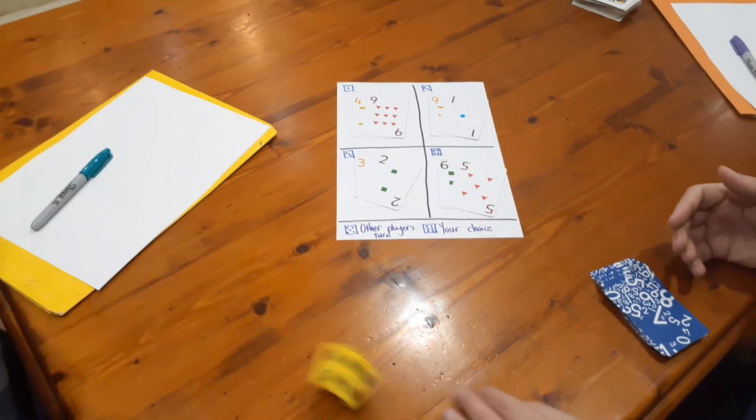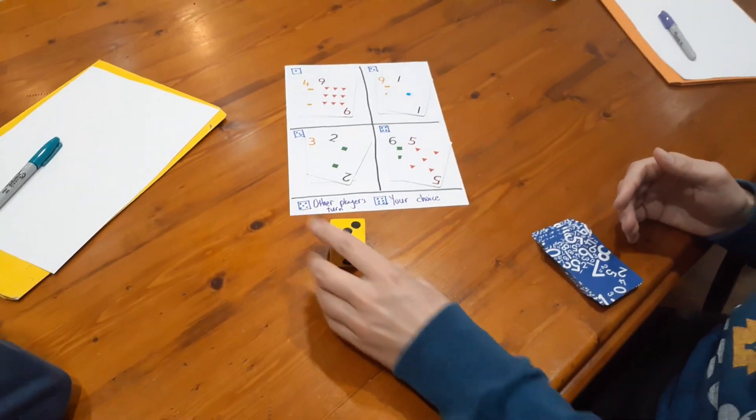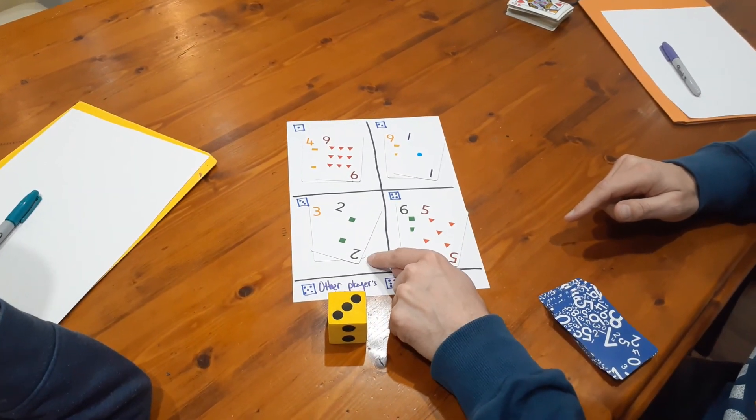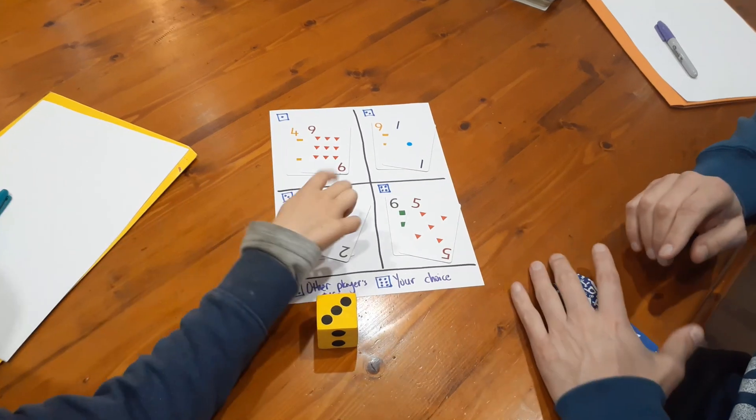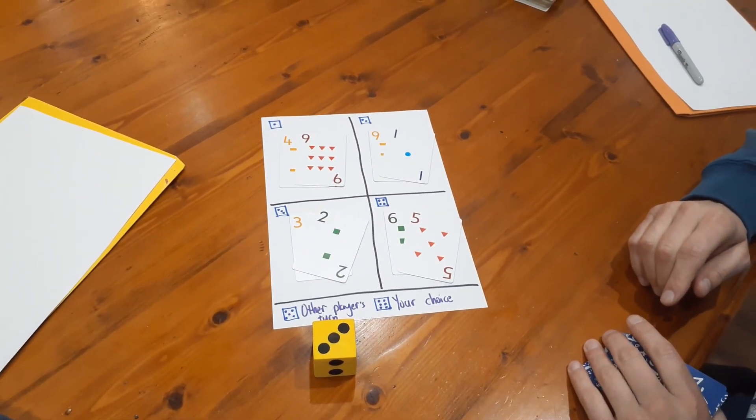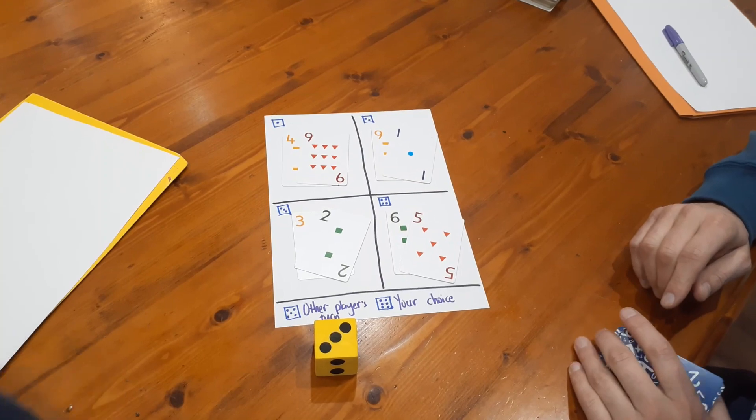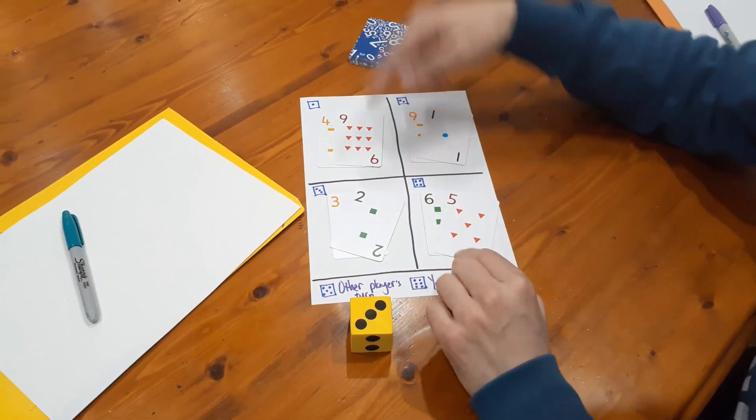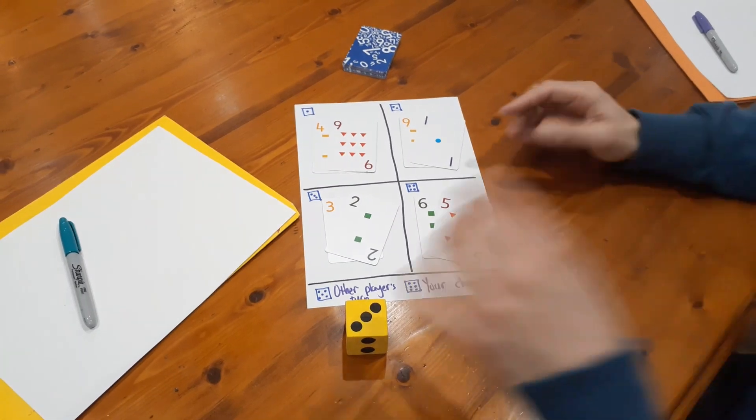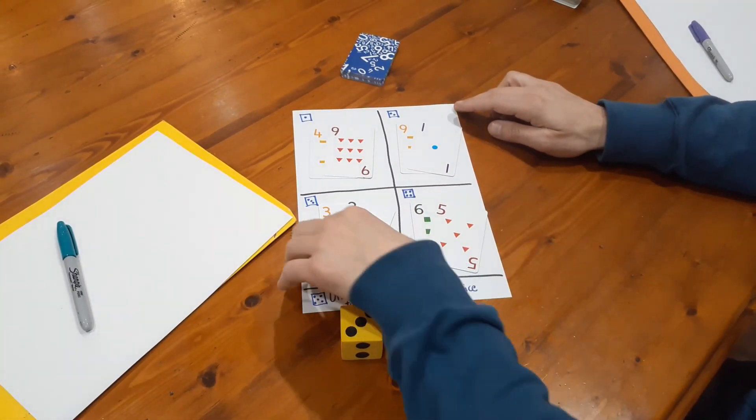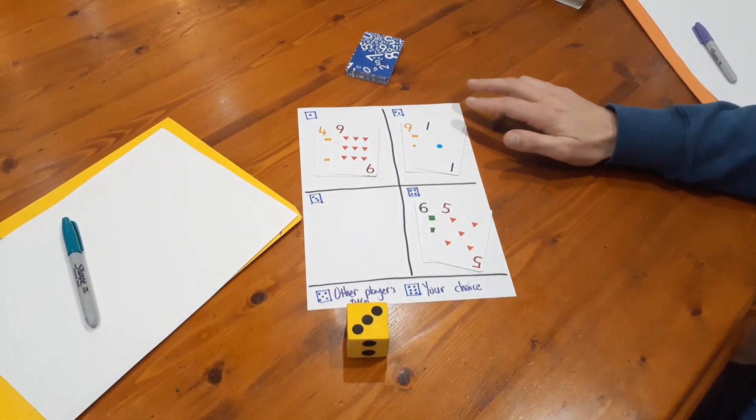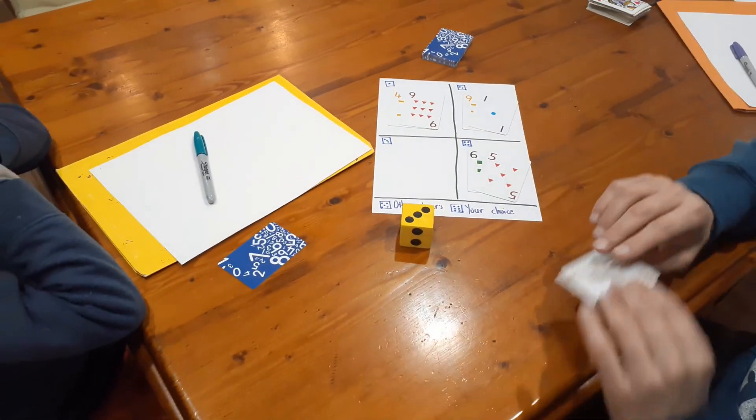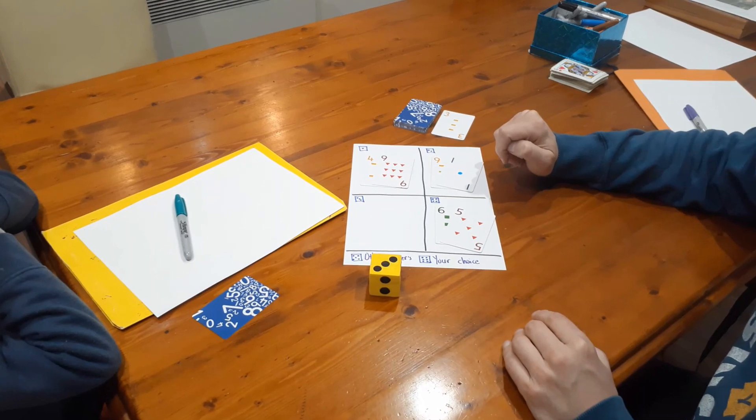So that player is going to roll the dice. Whatever number they get they have to tell us why this number does not belong. It's the only even number. Okay now because he said it's the only even number, he scores a point. The way we indicate he scores a point is we take those cards out, we give him one card so that's one point for him, the other card goes into the discard pile.